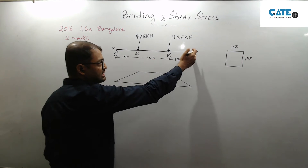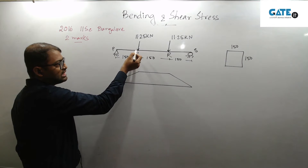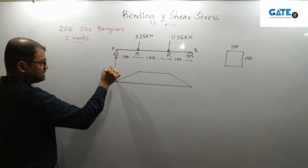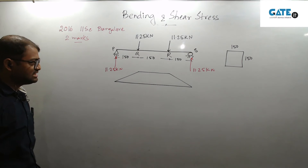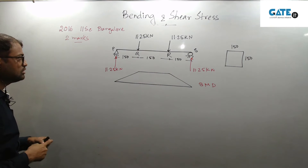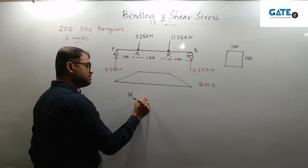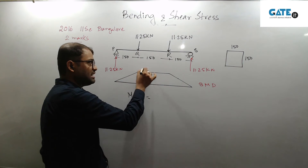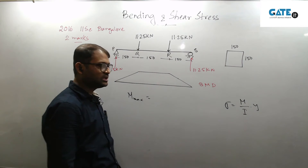Simply supported with point loads of 11.25 and 11.25 — it is a very symmetric condition. The reaction is 11.25 kN on each side. So what will be the bending moment value at the load point? We are interested in the maximum bending moment, and hence the corresponding maximum bending stress. We are interested in M divided by I into y.